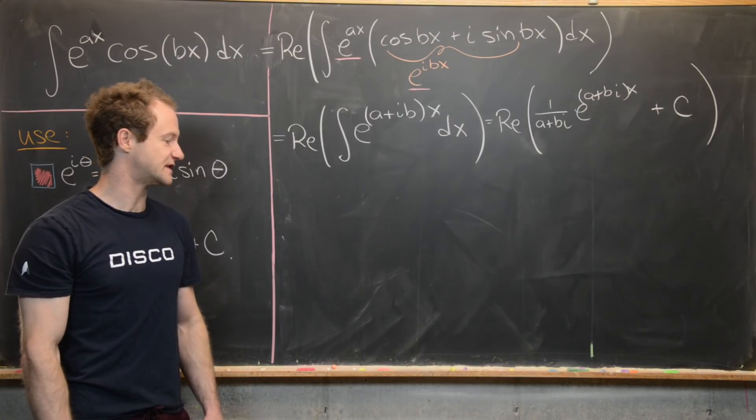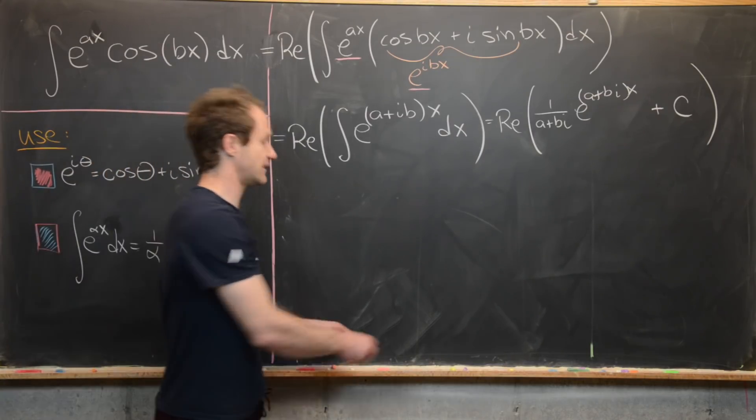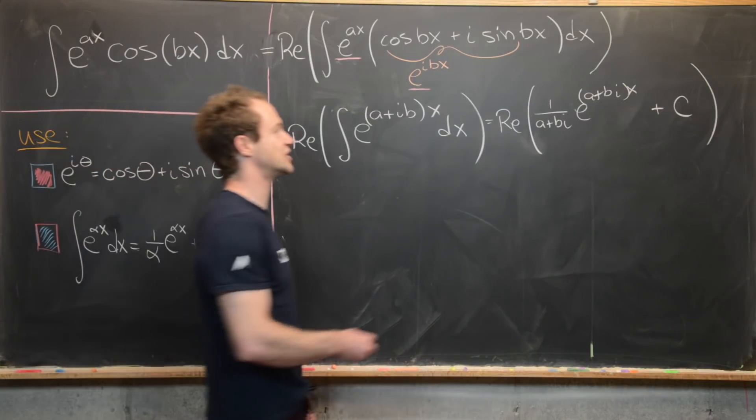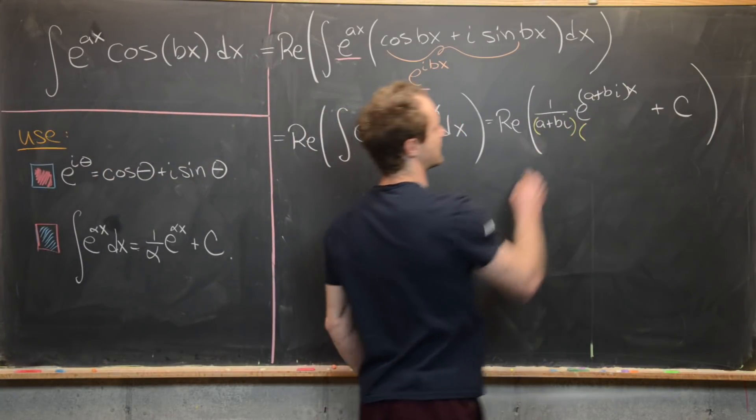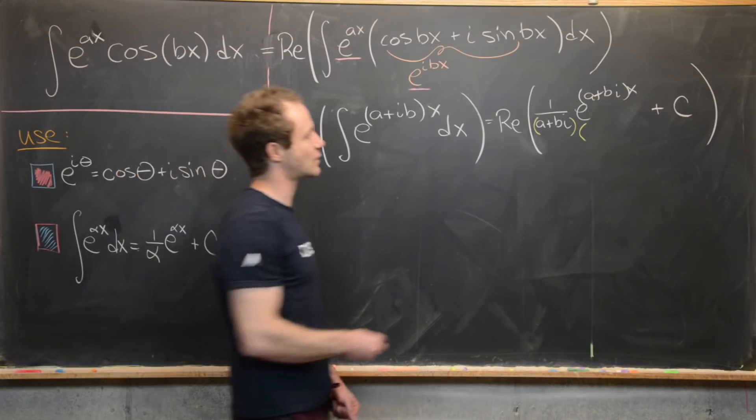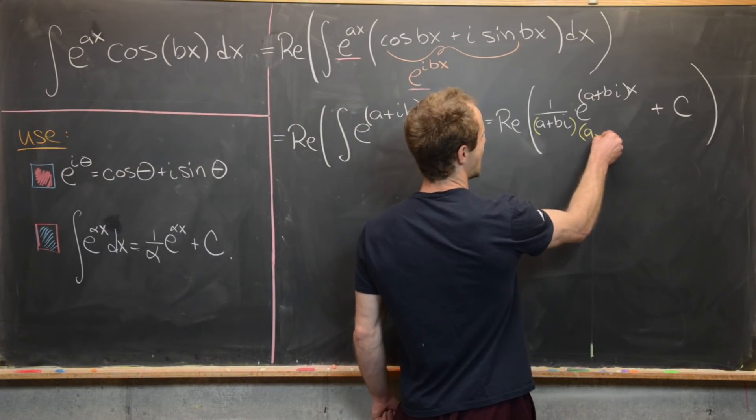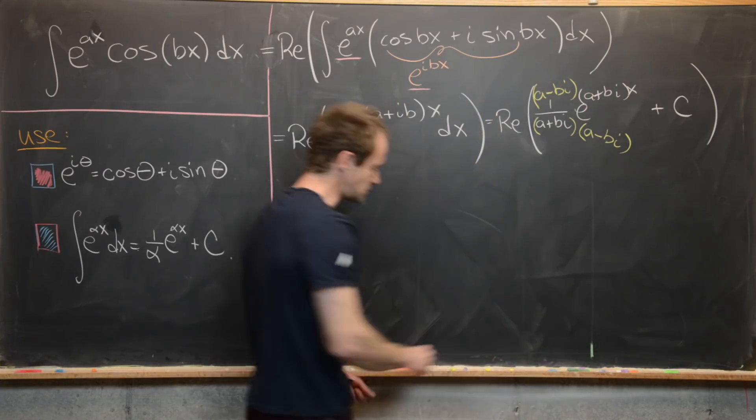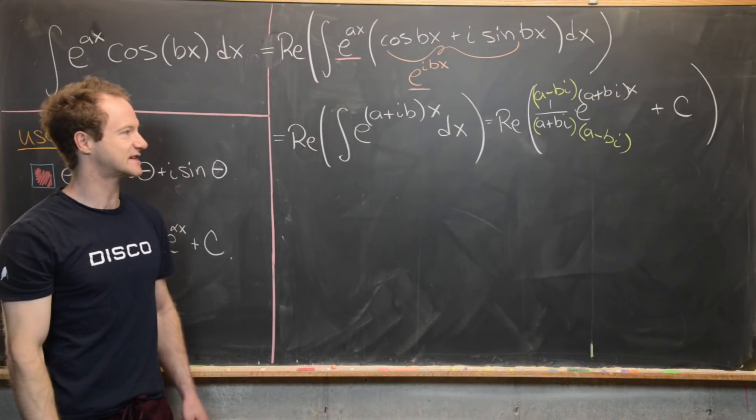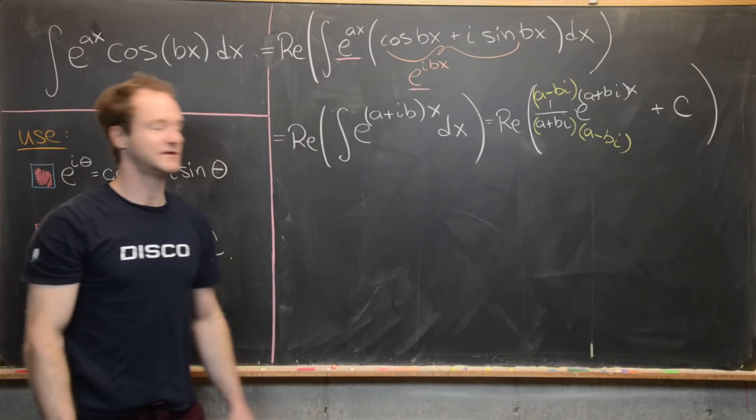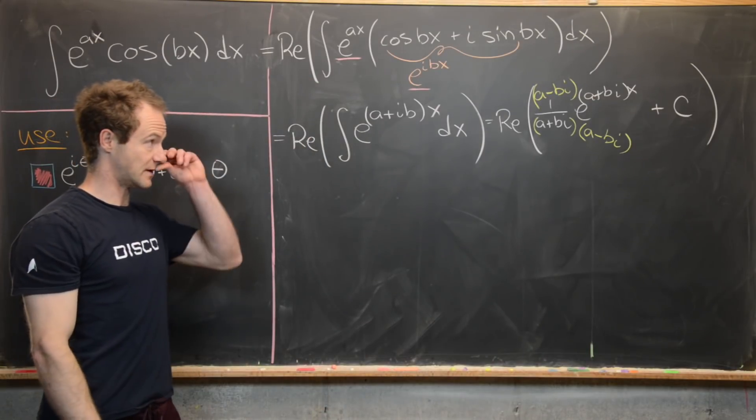Generally, we don't want to keep complex numbers in the denominator. So we can get rid of the complex number from the denominator by multiplying by something called the conjugate. This should look familiar from maybe the radical conjugate when solving limit problems from calculus one. So here I'm going to multiply by (a-bi) in the numerator and the denominator. Notice that doesn't change anything because I've multiplied by one, but that will have the effect of turning this denominator into a real number.